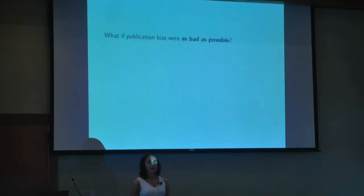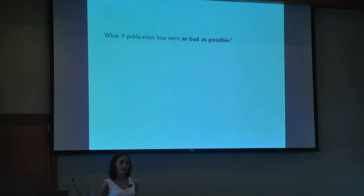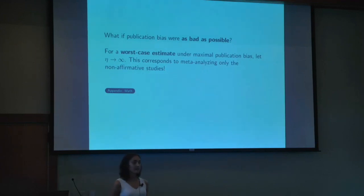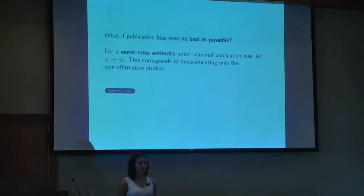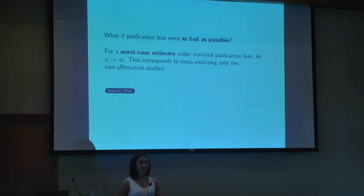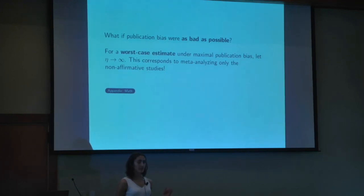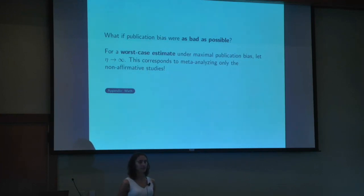You can also answer a different type of question: what if publication bias were as bad as possible? This corresponds to letting eta go to infinity — what if affirmative studies were essentially infinitely more likely to get published than non-affirmative ones? Taking the limit gives us meta-analyzing only the non-affirmative studies, essentially throwing away all the affirmative ones. This can be interesting because sometimes even the worst-case point estimate under this model is still a scientifically meaningful effect size — which is a pretty good argument for robustness.